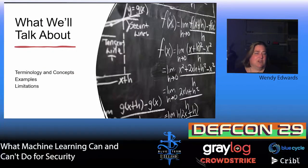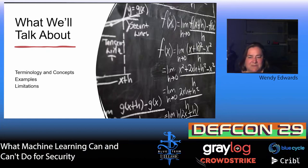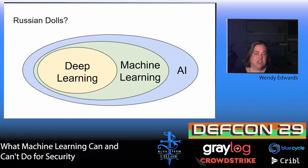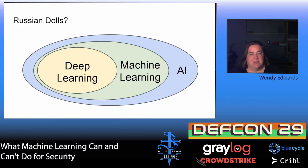So what are we going to talk about? Let's start with terminology and concepts, we'll have some examples, and we'll talk about the limitations of machine learning. Probably a lot of you have heard of artificial intelligence, machine learning, and deep learning — they're essentially nested within each other. AI is the broadest category, then machine learning, then deep learning.